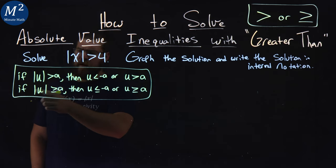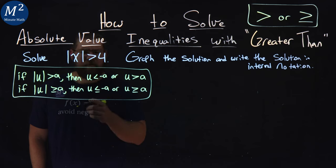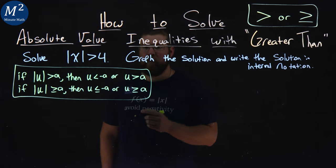Similarly, if the absolute value of u is greater than or equal to a, then u is less than or equal to negative a, or u is greater than or equal to positive a.